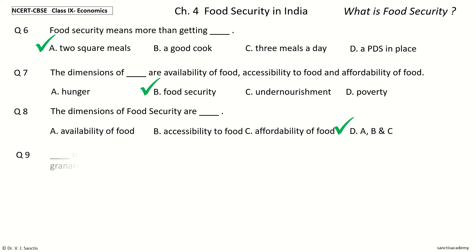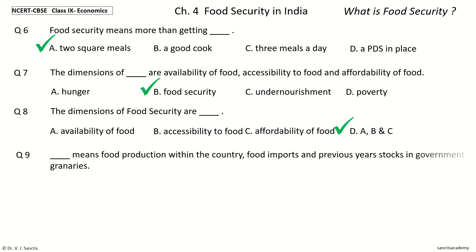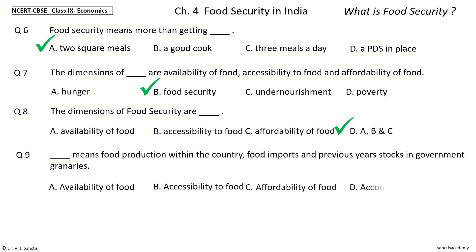Question 9: Dash means food production within the country, food imports, and previous year stocks in government granaries. The options are: availability of food, accessibility to food, affordability of food. Your time to choose. And the answer is availability of food. So availability of food means food production within the country, food imports, and previous year stocks in government granaries.